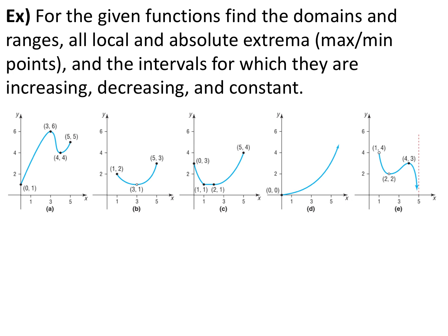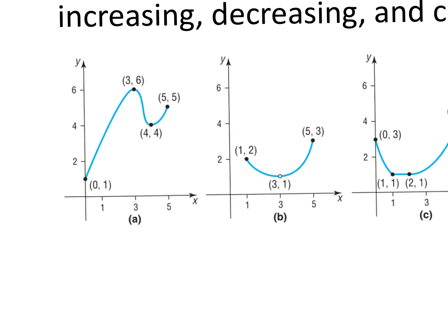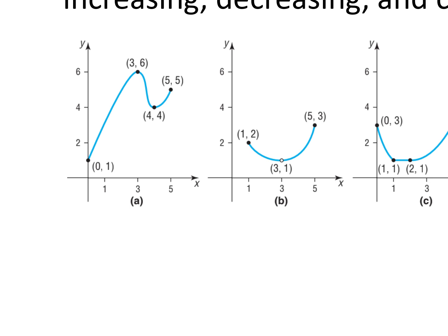Looking at graphs, we can find all of these properties: domains and ranges, which we've talked about previously, and then local and absolute extrema — extrema being the general word for maximum and minimum — and intervals for which it's increasing, decreasing, or constant. For example, looking at graph A, we can find all of those pieces of information just from the graph.